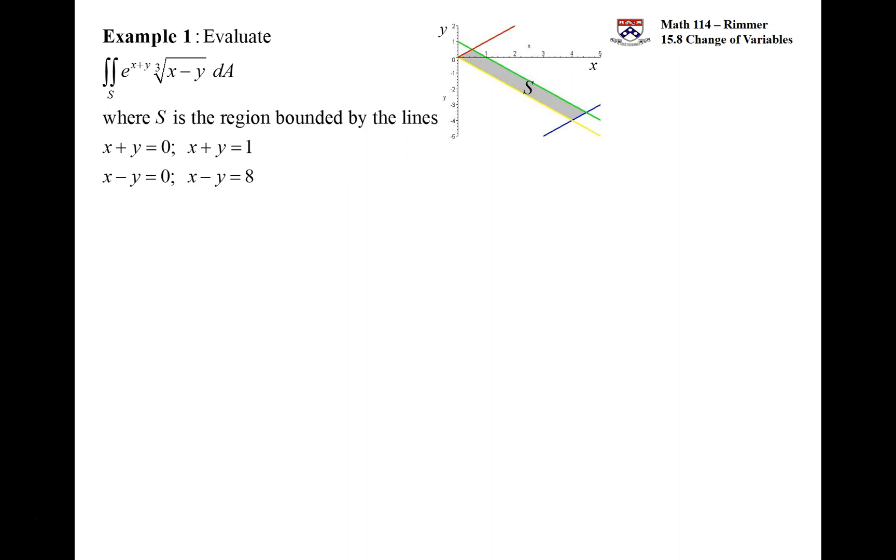And what's nice is this region then becomes a rectangular region. If I let x plus y be equal to u and x minus y be equal to v, then I have exactly the fact that u is going to go from 0 to 1 and v is going to go from 0 to 8. And integrating a rectangular region is very nice. All the bounds are numerical. And so the region now has been simplified.